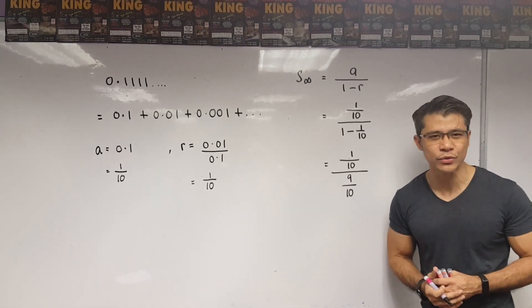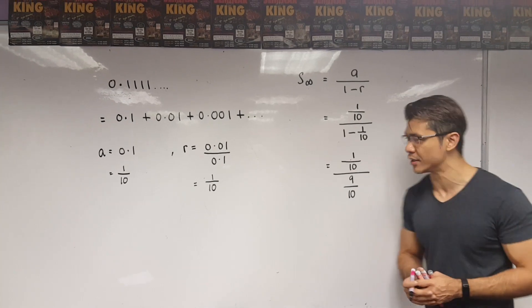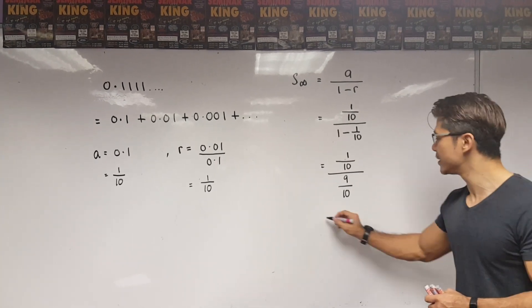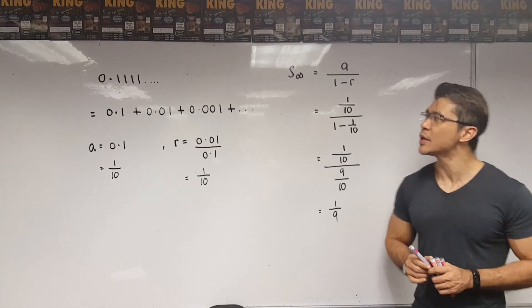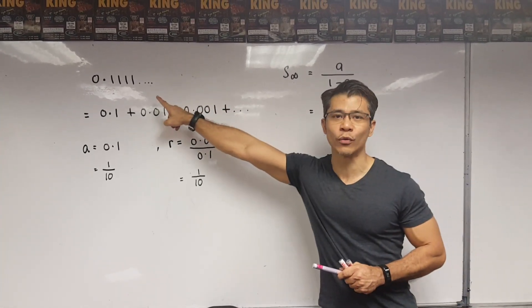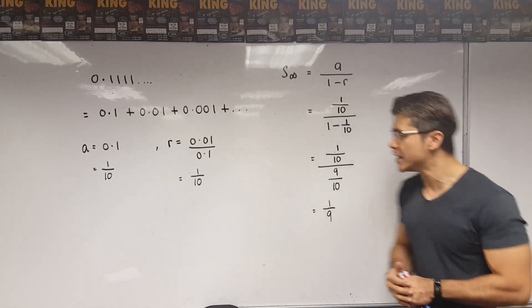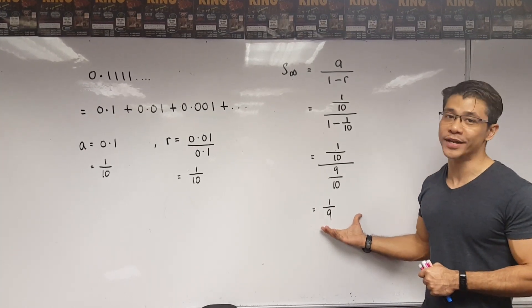So, that means we have 1 over 10 over, this is 9 over 10. Now, dividing these two fractions, we will now get this fraction. And what do we get? Well, the answer is 1 over 9. So, you see 0.1111 which is a recurring decimal is actually equal to 1 over 9.